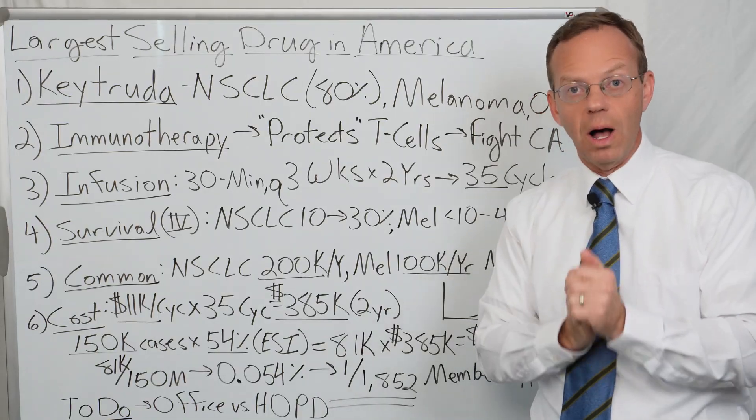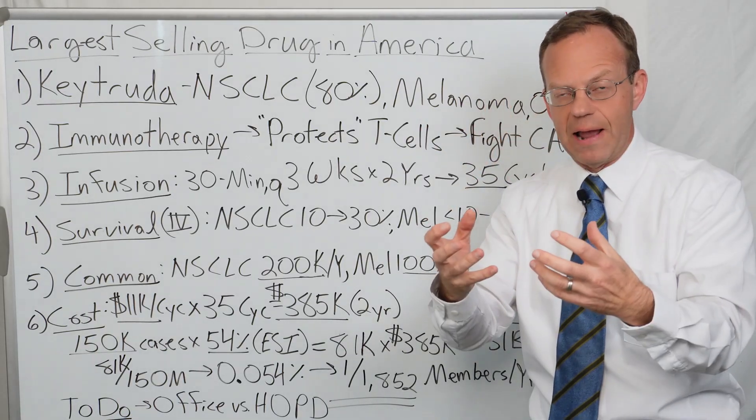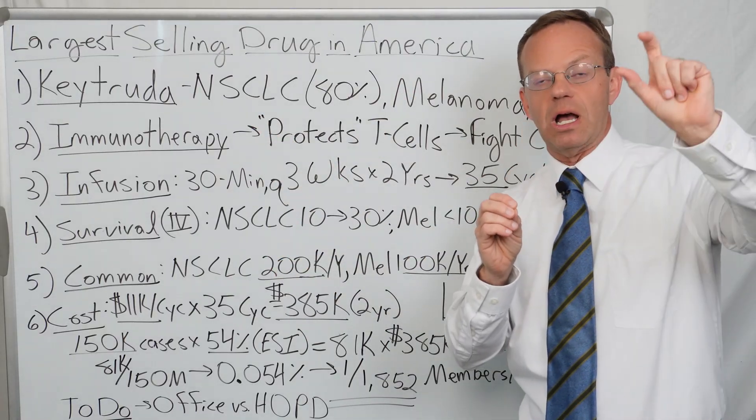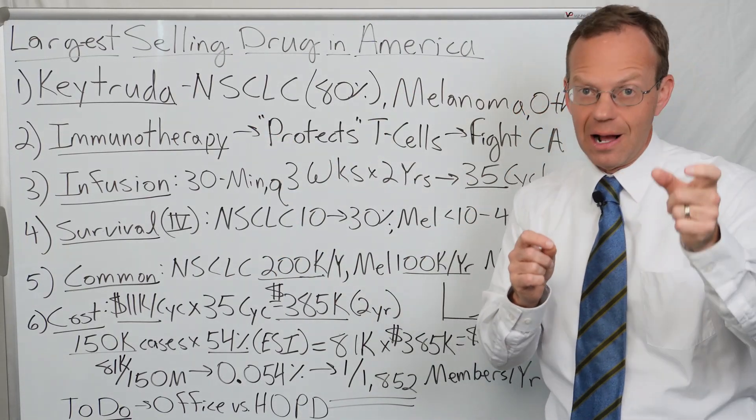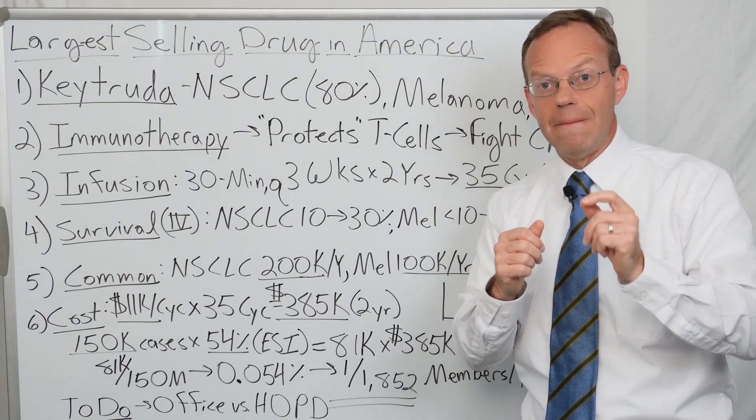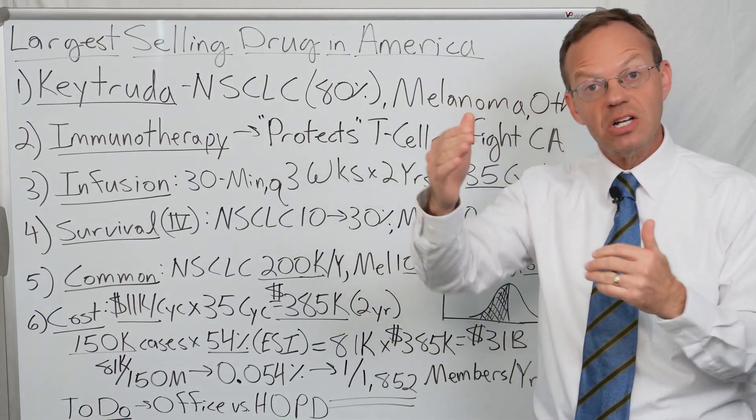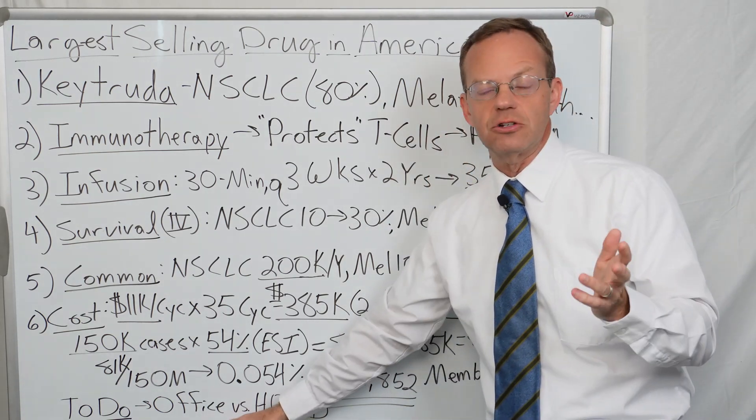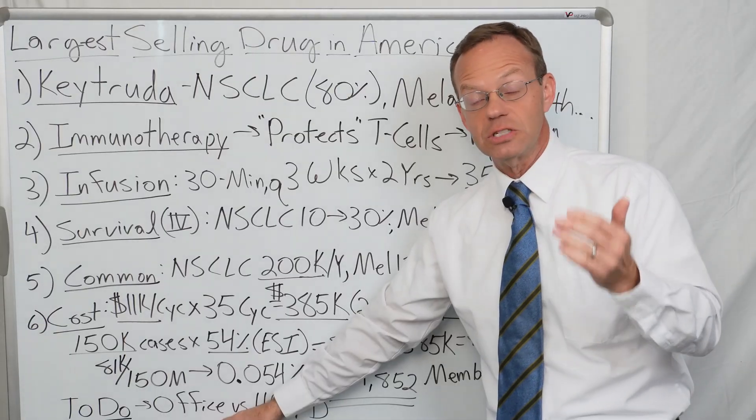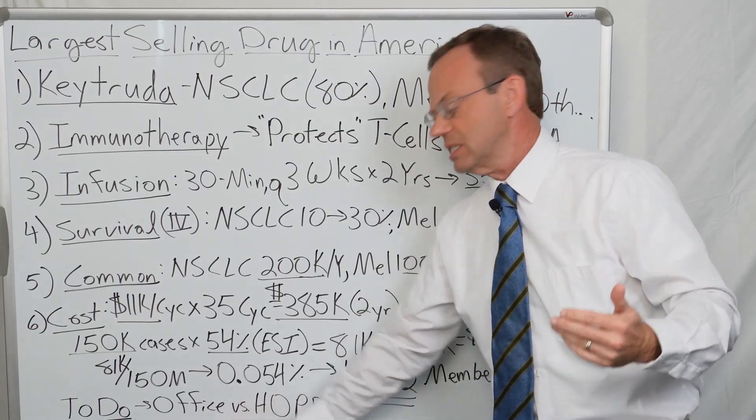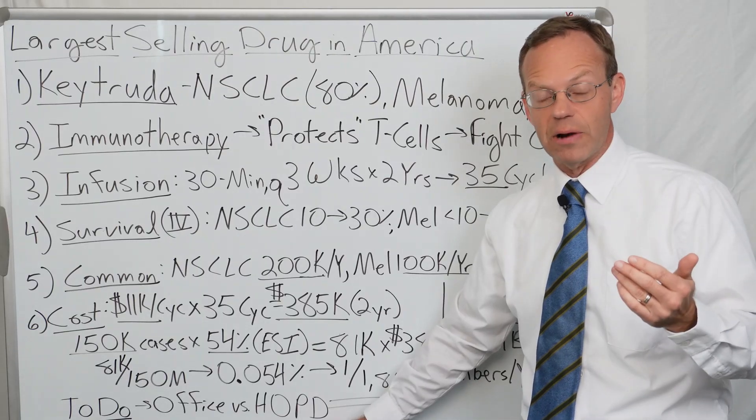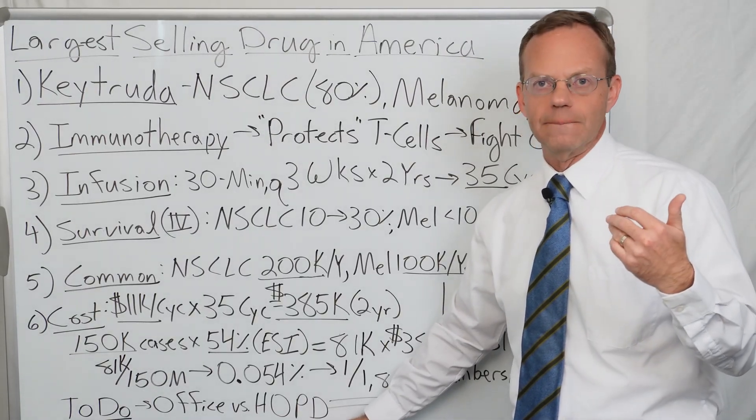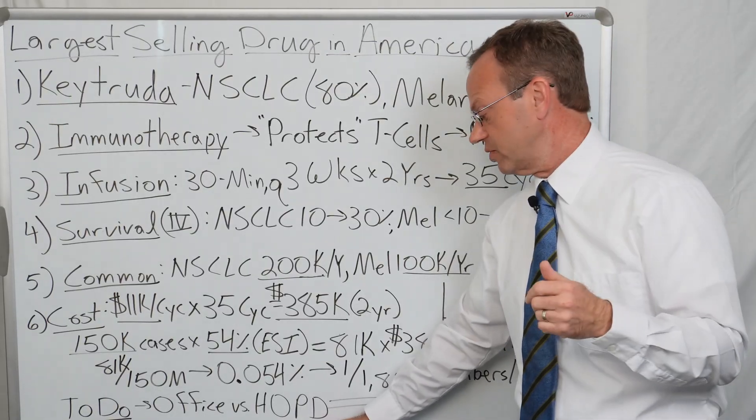This is part of the reason why hospital systems have bought oncology practices so they can buy the Keytruda and bill it for much more because their network contracts are much higher than independent oncologists. If you get Keytruda at an independent oncology practice in the office, it's going to be much less expensive than if you get it at an oncology practice owned by the hospital system or that does infusions at the hospital.